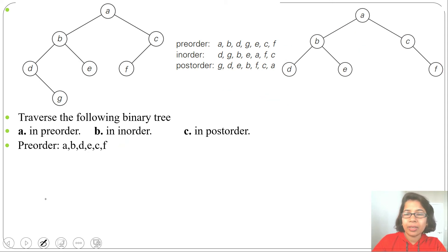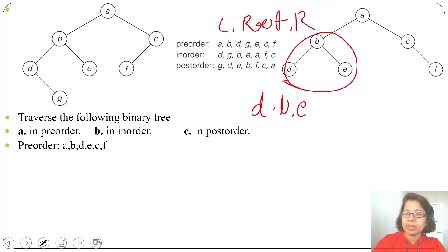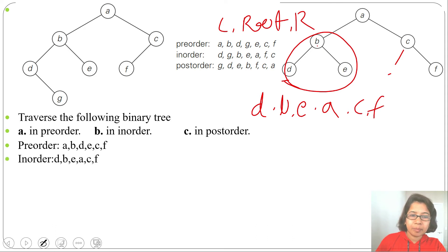For in-order (left, root, right): first visit D, then root B, then E. Left part is done; visit A. Here no left child, so visit C, then F. In-order result: D, B, E, A, C, F.